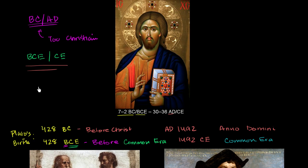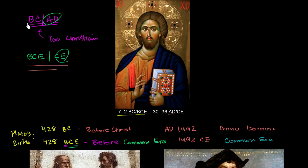The whole point of this video is that you don't get confused between BC and BCE. You don't think that AD stands for after death — it stands for Anno Domini, the year of the Lord, or the year of our Lord. And CE stands for common era. Both BCE and CE refer to essentially the same count after the theoretical birth of Christ, which we don't really know when it actually happened — it probably did not happen at the beginning of 1 AD or 1 CE.